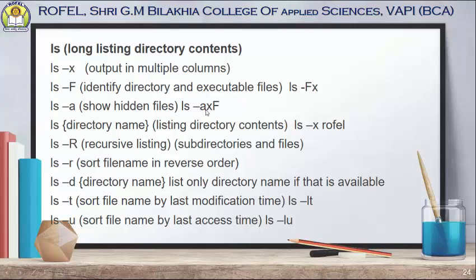You can also combine options, such as ls -axF together. If you use ls with the name of a directory, it will show the contents of that particular directory — its subdirectories as well as its files. ls -R (capital R) is used for showing a recursive listing.